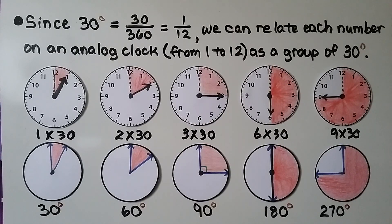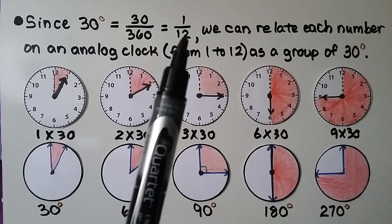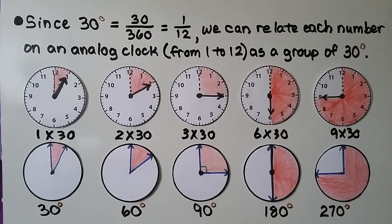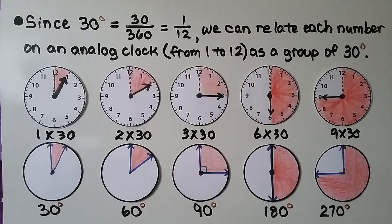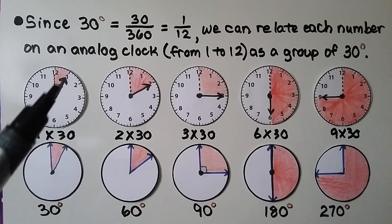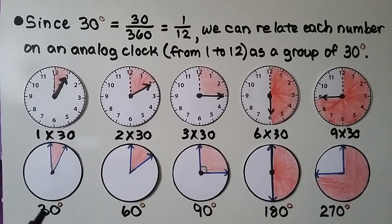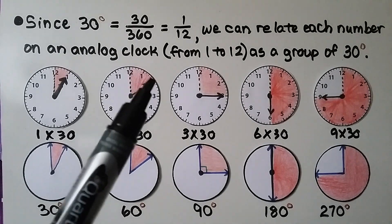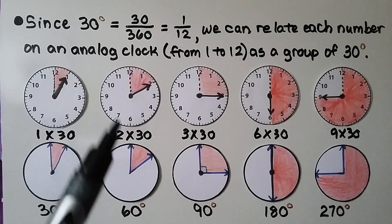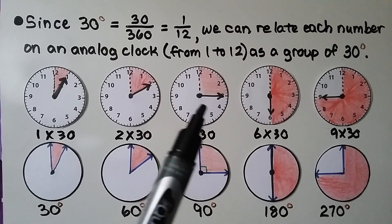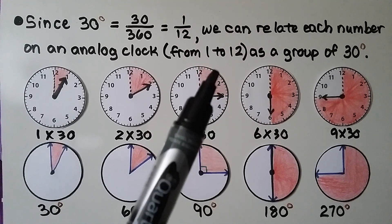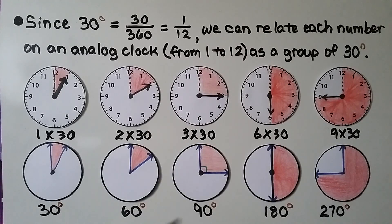Since 30 degrees is equal to 30/360ths, which we just found was equal to 1/12th, we can relate each number on an analog clock from 1 to 12 as a group of 30 degrees. If the minute hand is pointing to the 1, that's 1 times 30 — a 30 degree angle. If it's pointing to the 2, we have two 30 degree angles together, that's 60 degrees. When it's pointing to the 3, that's 3 times 30 degrees, that's 90 degrees.